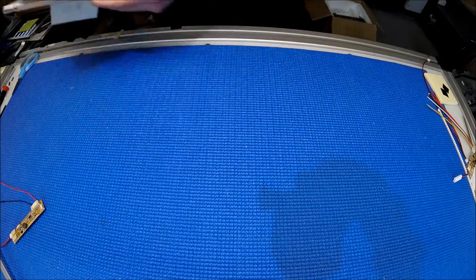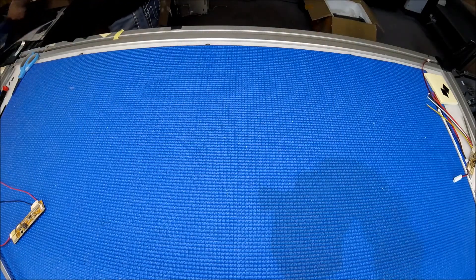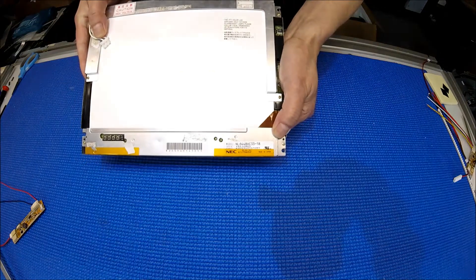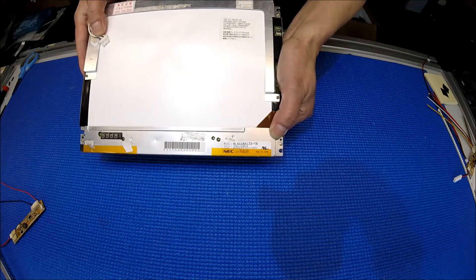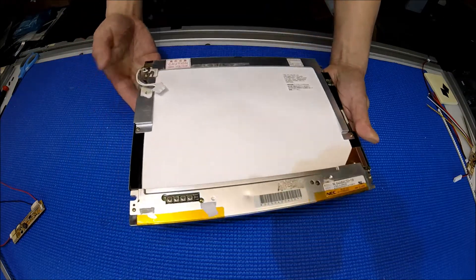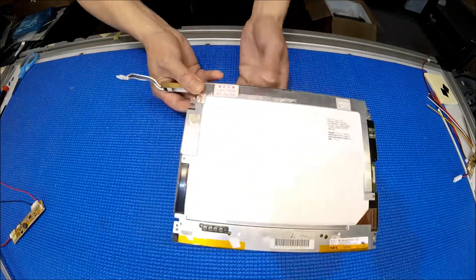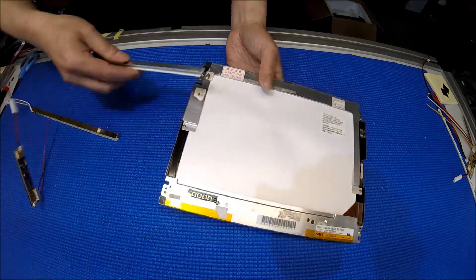I want to show you another screen here with a different part number, but it's easy too. This one is called NL6448AC33-18. Same thing, they have a clip here, so you push it down, slide out, just slide the clip back.